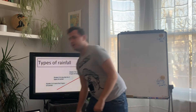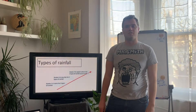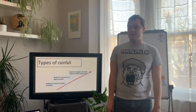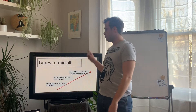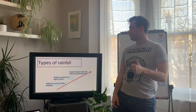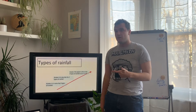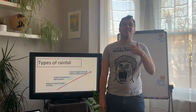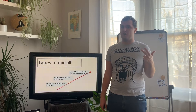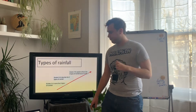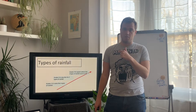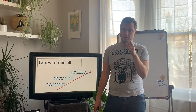So, title in your books today please: 'Types of Rainfall.' Can you please all write that in your books and underline it. We're going to name the three different types of rainfall, describe these types of rainfall, and then think about where we would expect to find them in the UK.